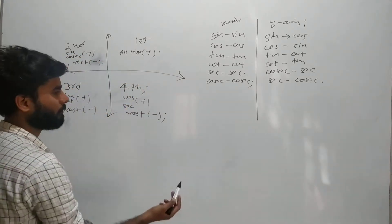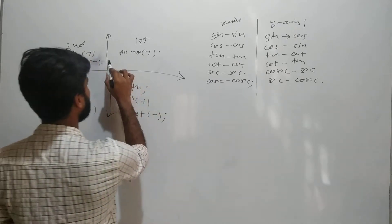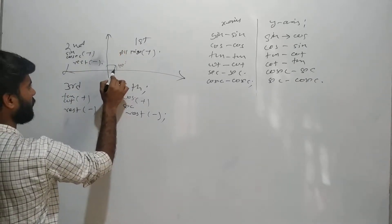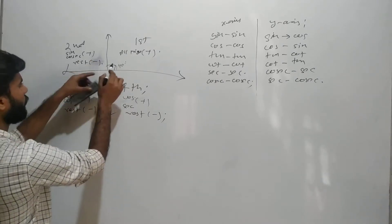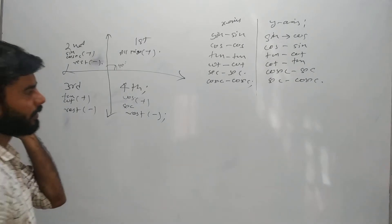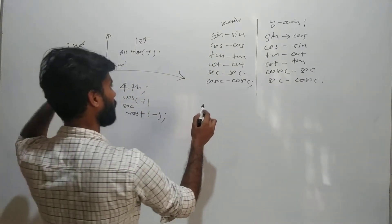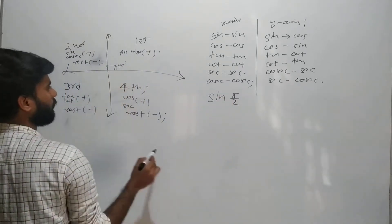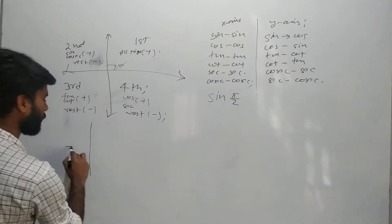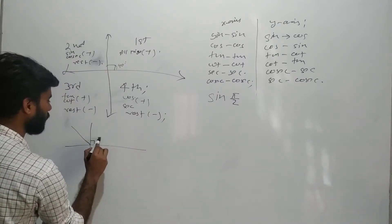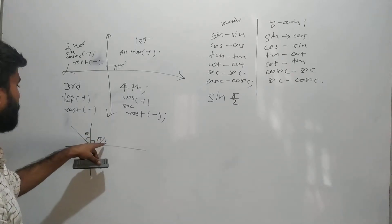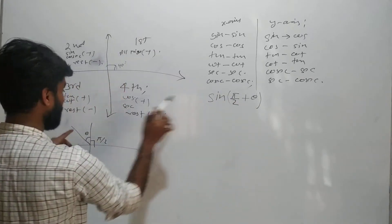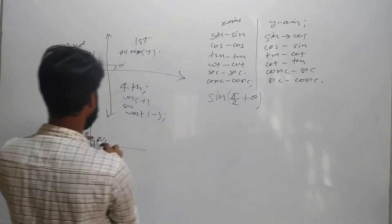The first quadrant is already done, so I will be doing it for the second quadrant. In the second quadrant, the angle is more than 90°. This is π/2 — so something added to π/2 will come into the second quadrant. We will check the different trigonometric ratios for this. Suppose we have sine(π/2 + θ) — this angle π/2 plus θ means it is coming into the second quadrant.